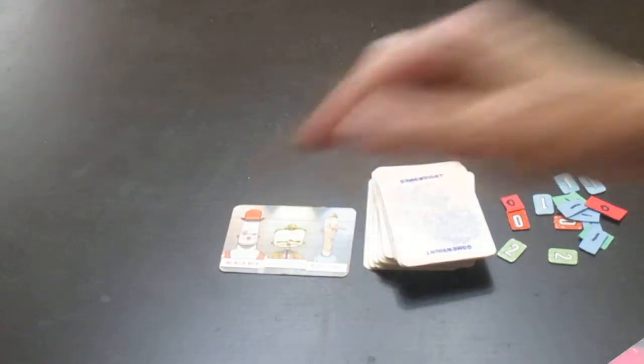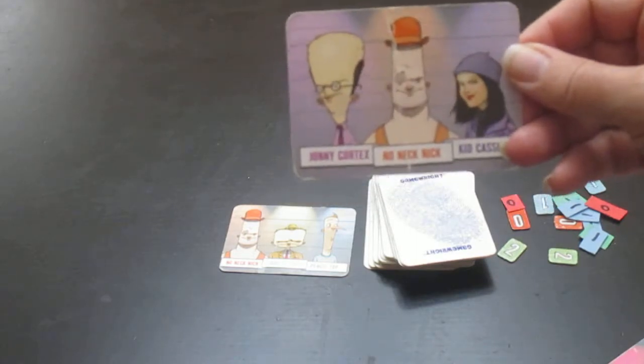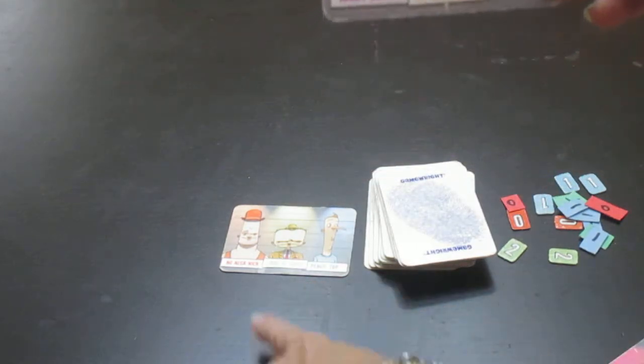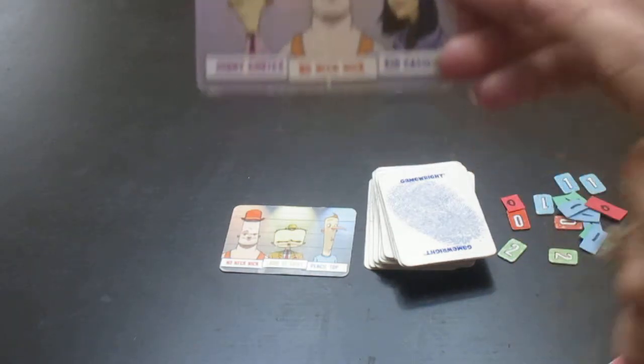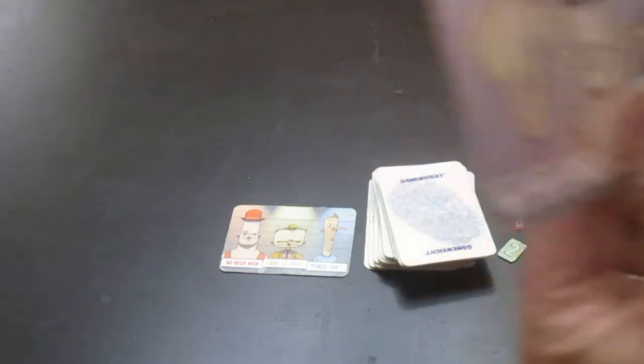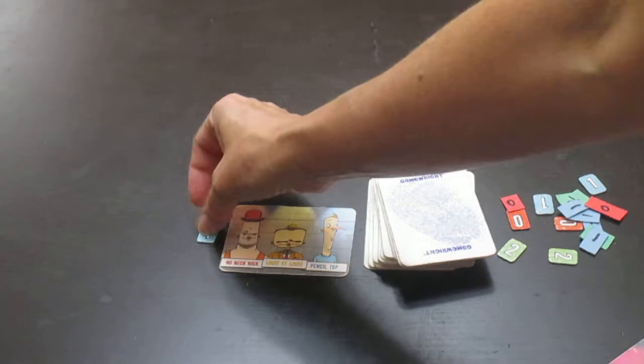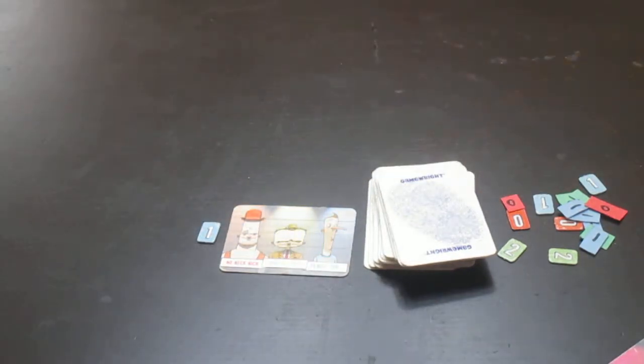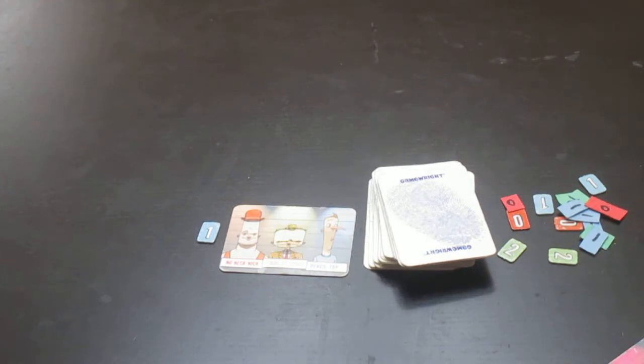The eyewitness looks at their card, which again nobody else can see, and they say, okay, how many people on this card match my eyewitness card? And the answer is one, No Neck Nick. So what the eyewitness does is he takes a number one and he sets it by here. Now all the detectives know that one of these characters is on this eyewitness card, but they don't really know which one yet.